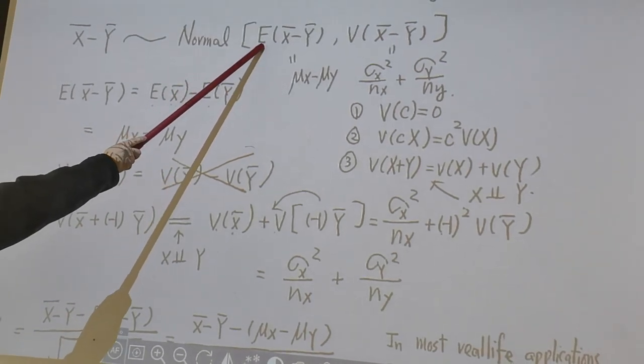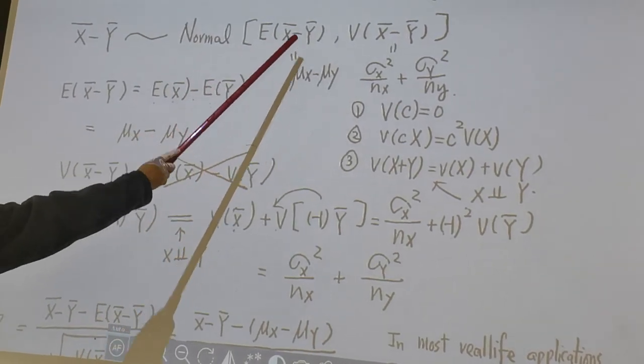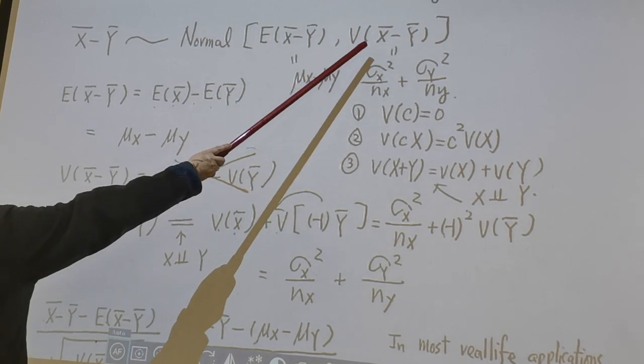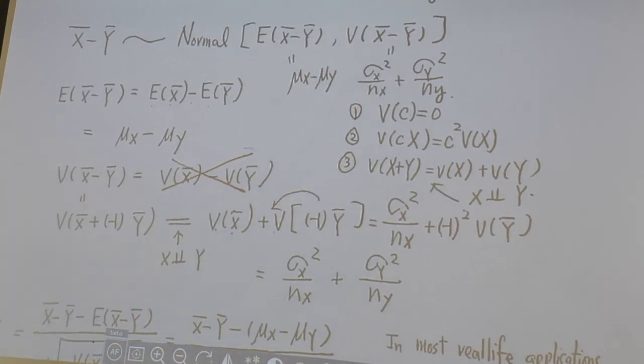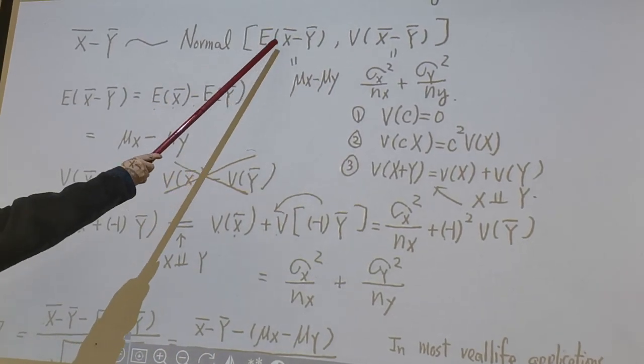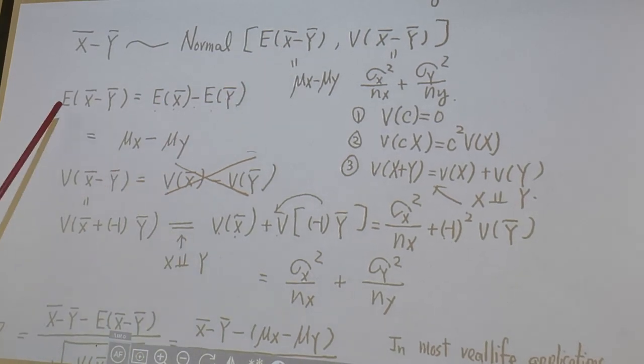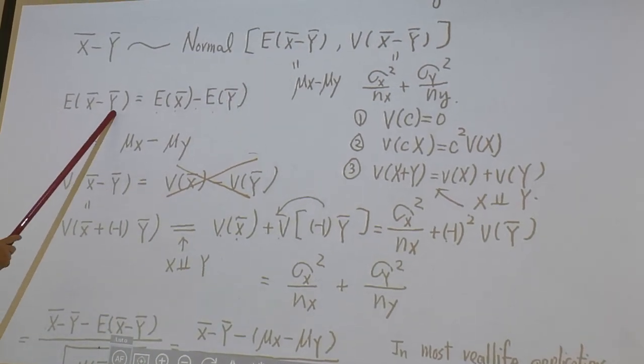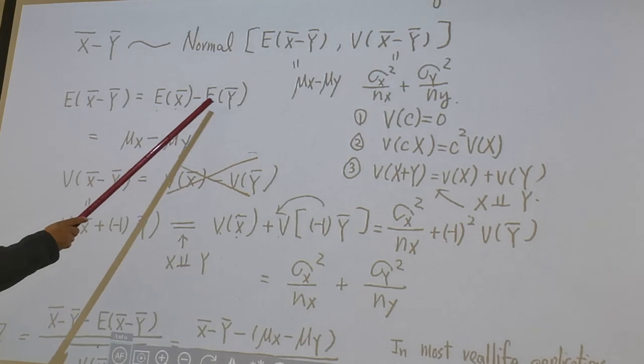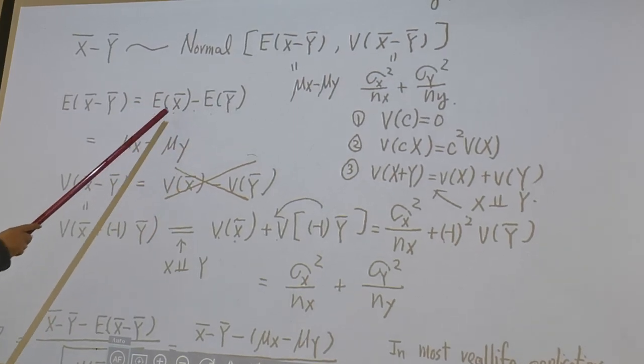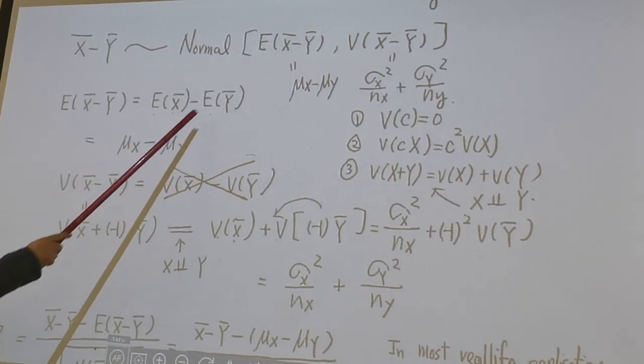And its mean is expected value of x-bar minus y-bar, and its variance is variance of x-bar minus y-bar. Let's first look at expected value of x-bar minus y-bar. Expected value of x-bar minus y-bar is E x-bar minus E y-bar, but E x-bar is mu x, E y-bar is mu y.